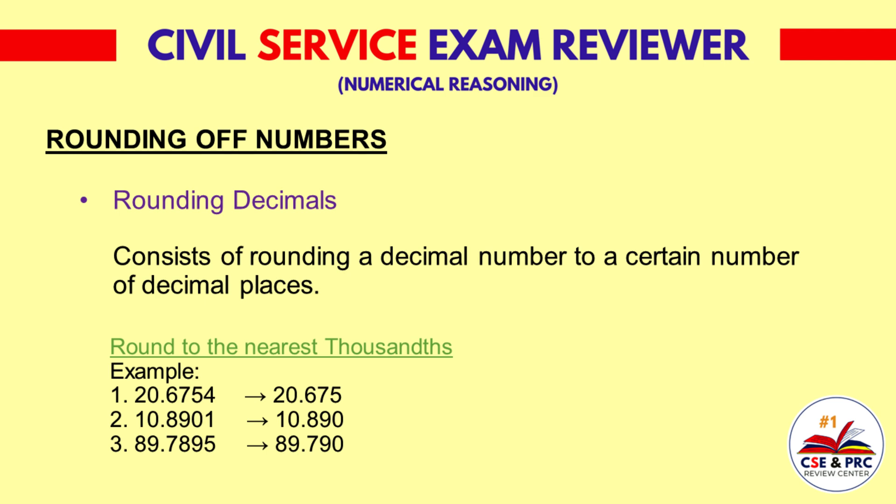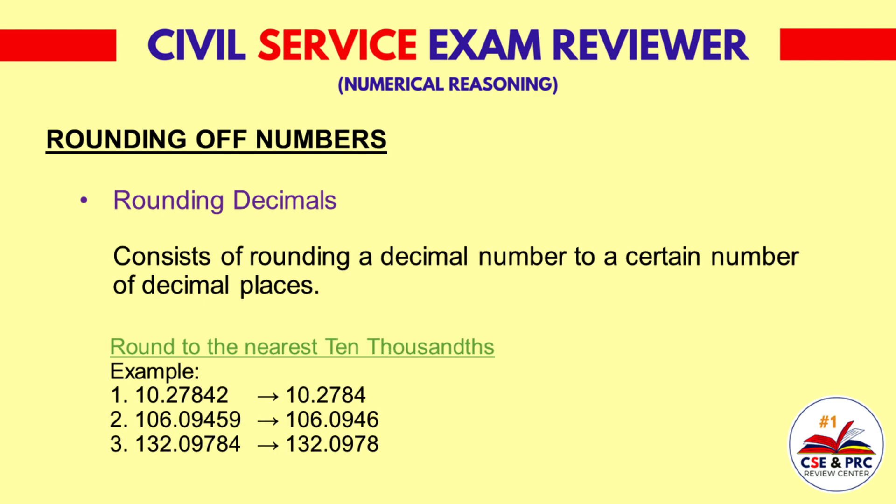Round to the nearest ten-thousandths. Example 1: 10.2784 — the result will be 10.2784. Example 2: 106.09459 — the result will be 106.0946. Example 3: 132.09784.